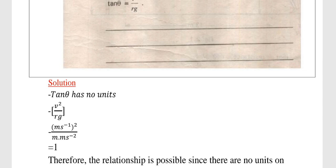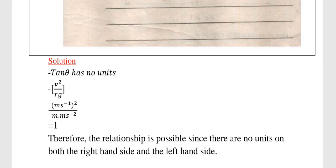A value of 1 basically means there are no units on the right hand side. So there are no units on the left hand side and no units on the right hand side. Therefore, this relationship is possible since there are no units on both the left hand side and the right hand side.